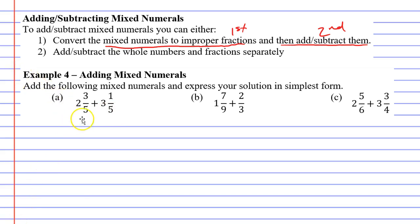When we add up our mixed numerals it's important that you add your fractions first. For question A we're going to add up the fractions three-fifths plus one-fifth. The denominators are the same — both five — so our solution will have a denominator of five, and when we add the numerators three plus one we get four.